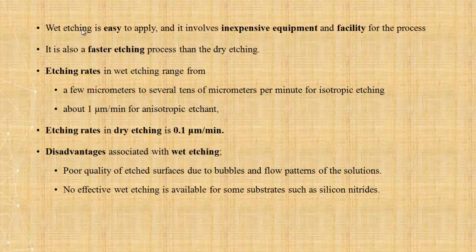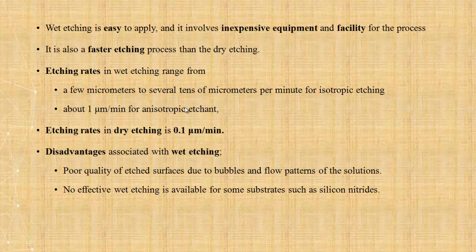Wet etching is an easy method. It involves inexpensive equipment and facility. Compared to dry etching, it is a faster process. The etching rate for isotropic etching is about a few micrometers to several tens of micrometers per minute. For anisotropic etching, it is about one micrometer per minute. Whereas in dry etching, the etching rate is about 0.1 micrometer per minute.